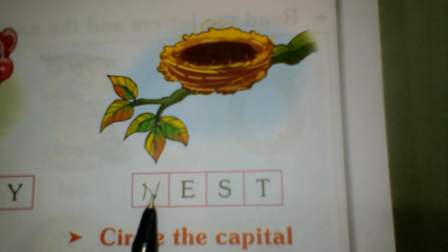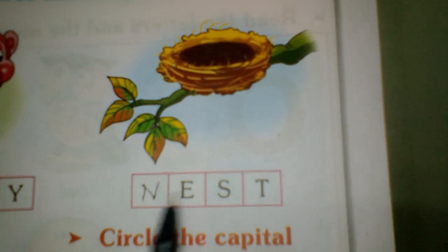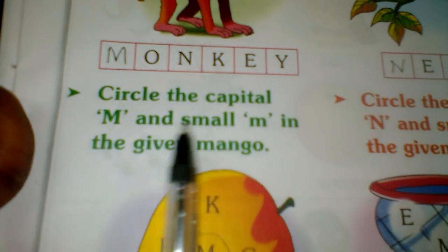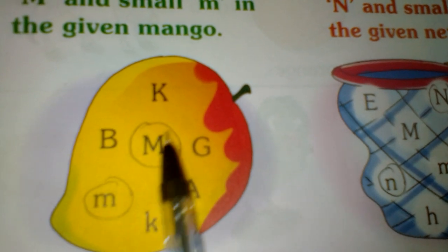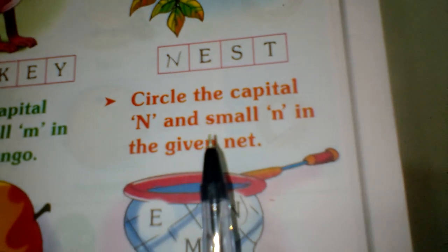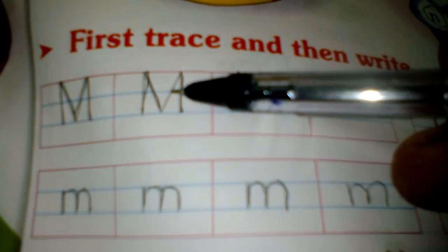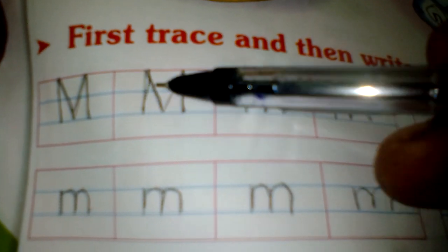Next, it is N-E-S-T. If you used a mango, you would want to make a circle of M and small. If you read about the circle, we should use a small. If you read about the same letter, first try and then write.